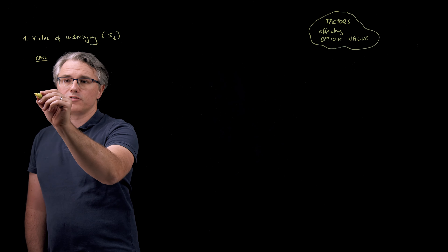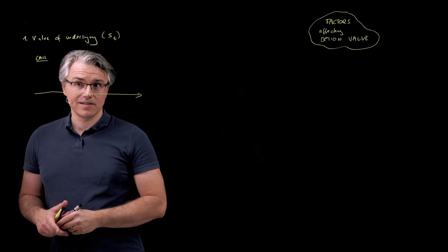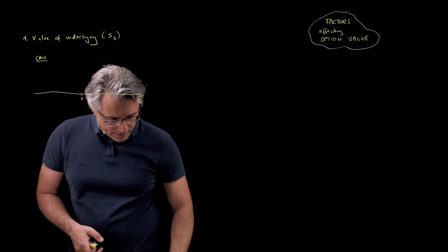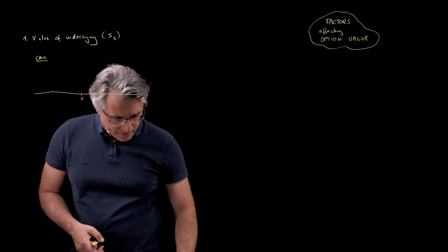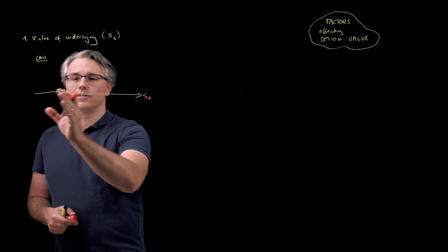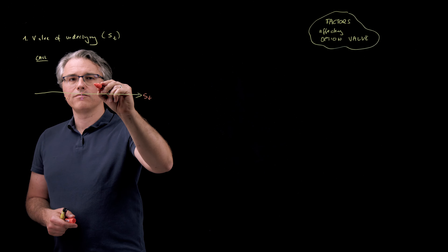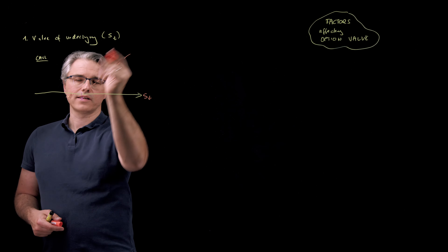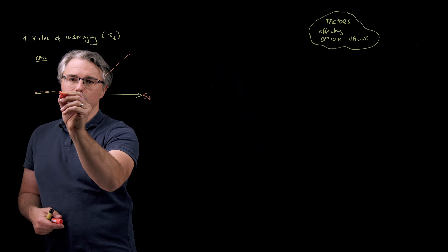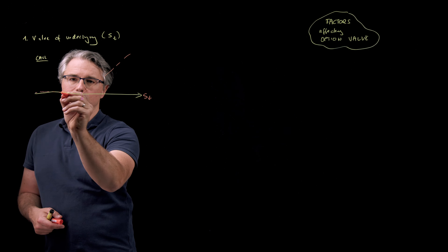Let's start with a call option, viewing things from the point of view of the investor. If I was to draw what happens to the value of a call option — a long position in a call — that would be X, the exercise price. And how the payoff at maturity works, depending on where S_T is, if it's to the right or to the left of X, we get a payoff which goes diagonally up, and here we've got zero.